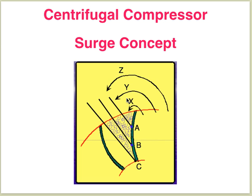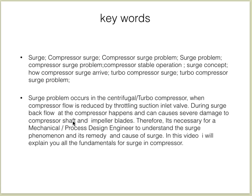Today we'll discuss the centrifugal compressor surge concepts. This picture depicts the surge or backflow in a centrifugal compressor. Surge occurs in centrifugal and turbo compressors only when the compressor flow is reduced by throttling the suction inlet valve. During surge, backflow at the compressor happens and can cause several damage to the compressor shaft and impeller blades. It is necessary for a mechanical and process design engineer to understand the surge phenomena, its remedy, and cause.